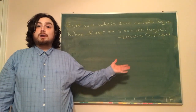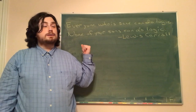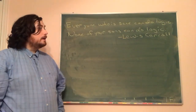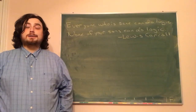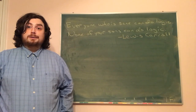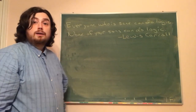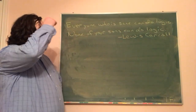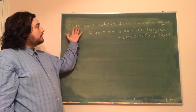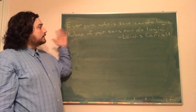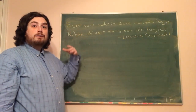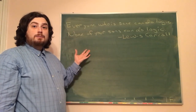Now as we look at this, we want to start off and read the statement. It says: everyone who is sane can do logic. None of your sons can do logic. So what we want to do is combine those and write those out. As we start to do that, we want to look first at whether there's anything that's variable in here — anything that's going to change. We notice that he's talking about everyone or your sons, so he's talking about people.